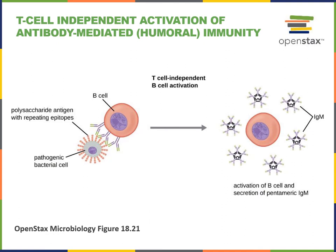There is a T cell independent mechanism for activation of antibody mediated immunity, and this requires a repetitive antigen. The epitope refers to the specific binding site of an antigen where the antibody can bind. If there are multiple binding sites for antibodies that are repetitive on the surface of a bacterial cell, this can lead to the activation of a B cell independent from a helper T cell.